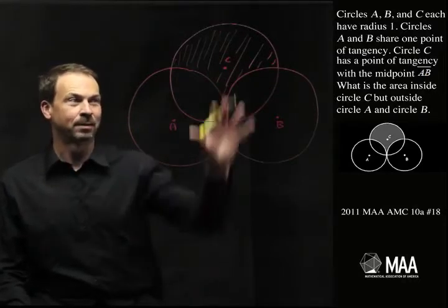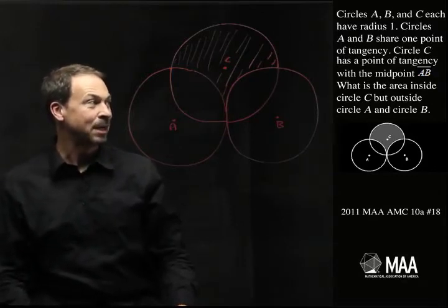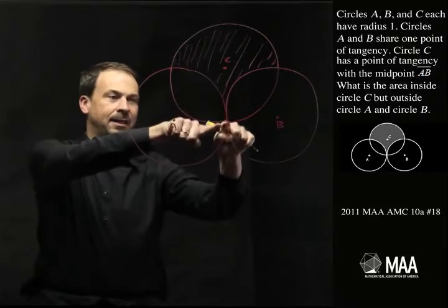Circles A, B and C each have radius 1, so I've drawn the three circles here already, each is radius 1. Circles A and B share one point of tangency. What does tangency mean? It's the place where they touch, so they touch right there.